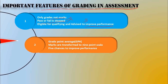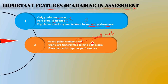Next, coming to the GPA — Grade Point Average. The overall marks, GPA as grade point average, result, eligibility for qualifying certificate, and advice to improve performance will all be mentioned. Marks are transformed to a 9-point scale, as we have seen in the previous slide. That is the 9-point scale.